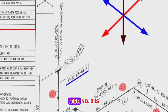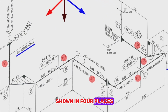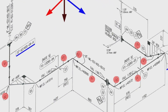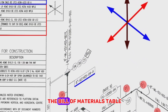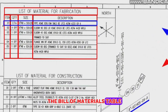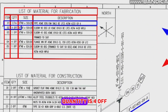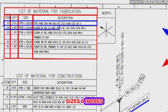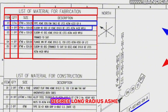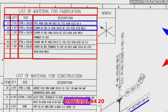Item number 2 is shown in four places on this pipe drawing. Looking at the Bill of Materials table: Item number 2, the quantity is 4 off, size 8 inches, schedule 20, elbow 90 degree, long-radius ASME, low-temperature carbon steel material, A420.